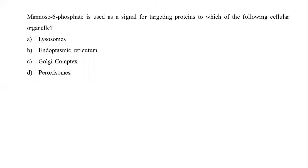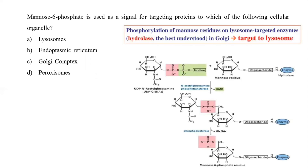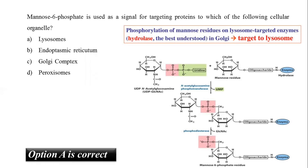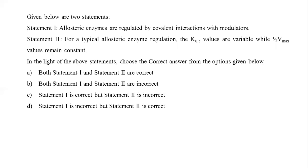Mannose-6-phosphate is used as a signal for targeting proteins to which of the following cellular organelles? Option A is lysosomes, B endoplasmic reticulum, C Golgi complex, and D peroxisomes. The Mannose-6-phosphate receptor sorts proteins into clathrin-coated vesicles leaving the trans-Golgi network, destined for lysosomes involved in breaking down cellular waste. The trafficking of lysosomal enzymes to lysosomes requires Mannose-6-phosphate residues on their N-linked sugar. The correct answer is option A, lysosomes.